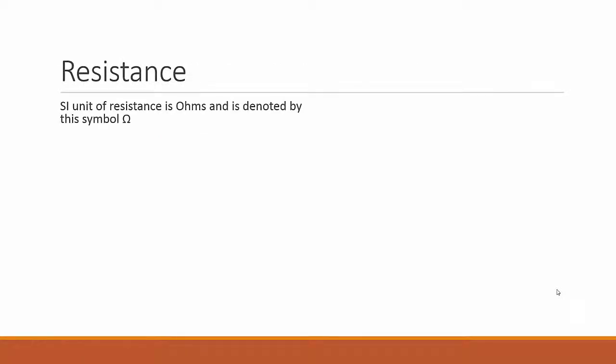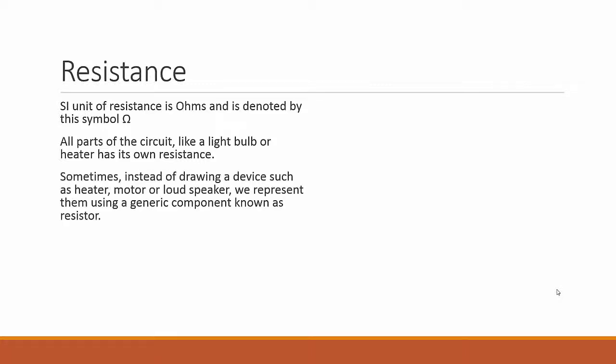The SI unit of resistance is ohms, denoted by this symbol Ω. All parts of the circuit like a light bulb or heater has its own resistance. Sometimes, instead of drawing a device such as a heater, motor or loud speaker, we represent them using a generic component known as a resistor, and it's represented by this circuit symbol.